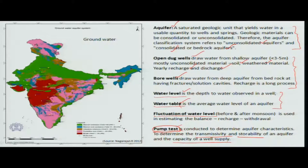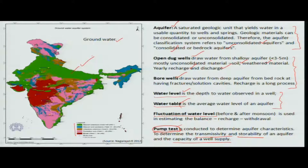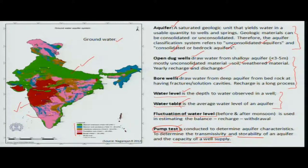For Indian conditions, these parameters are consolidated in the groundwater aquifer system mapping, which shows expected yield from different parts of India. The alluvial area of the Ganges gives maximum yield, whereas rocky areas have lower yield. This information helps determine how much supplementary irrigation can be provided from groundwater depending on location.